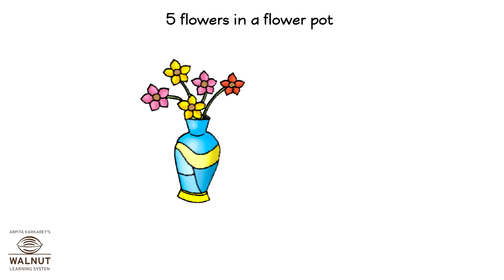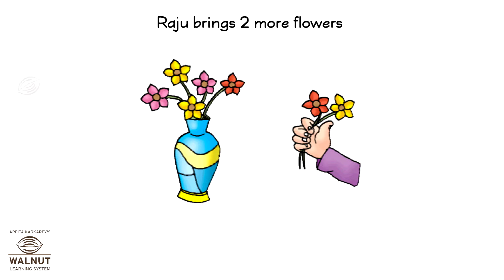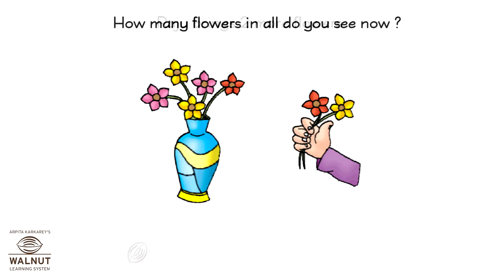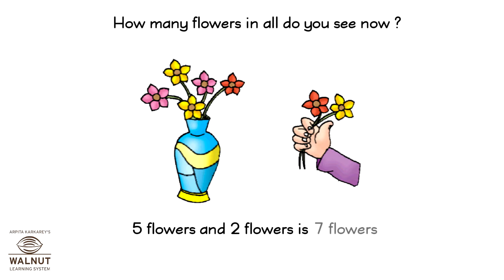Five flowers in a flower pot. Raju brings two more flowers. How many flowers in all do you see now? Five flowers and two flowers is seven flowers.